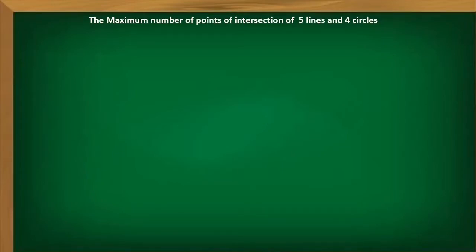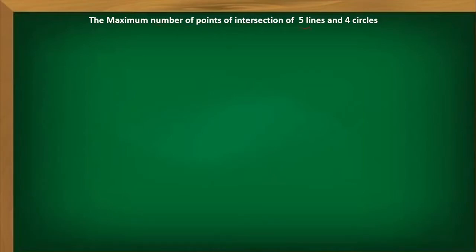Hello students. Here in this class we are going to solve two problems from permutation combinations, a little bit geometry based. We need to find the maximum number of points of intersection whenever five lines and four circles are given.